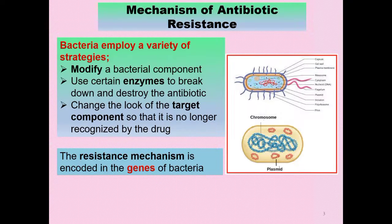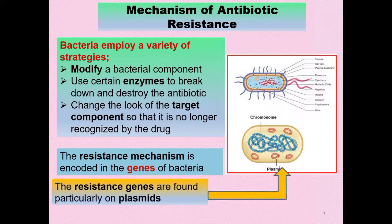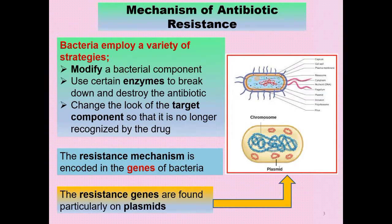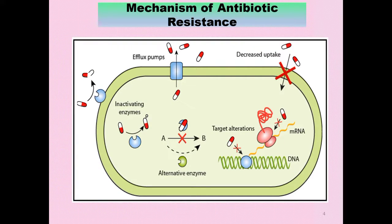The resistance mechanism is encoded in the genes of the bacteria, and these genes are found particularly on the plasmids. Here we can see the mechanism of antibiotic resistance — bacteria have certain components through which they become resistant. For example, efflux pumps are certain proteins produced by bacteria to help drain out the antibiotics.